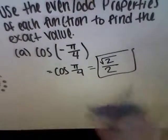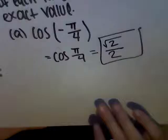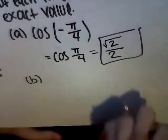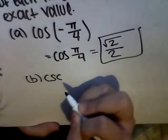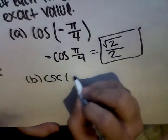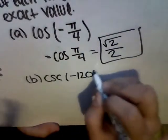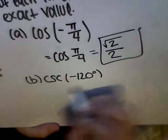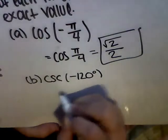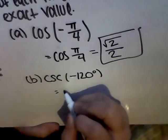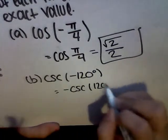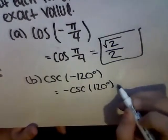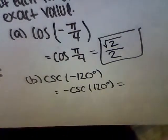B is secant of negative 120 degrees. Again, we're going to transfer the negative. It equals negative secant of 120 degrees. Now we're going to find the exact value again.